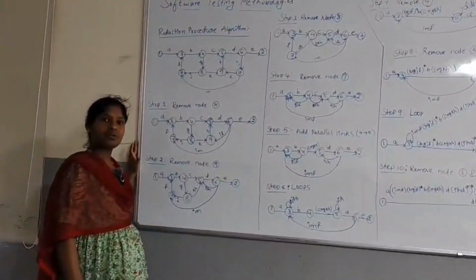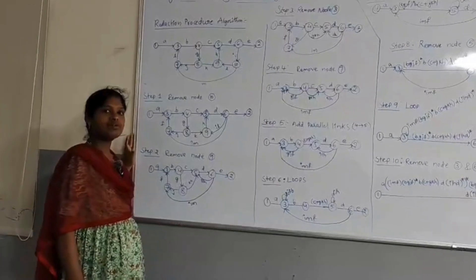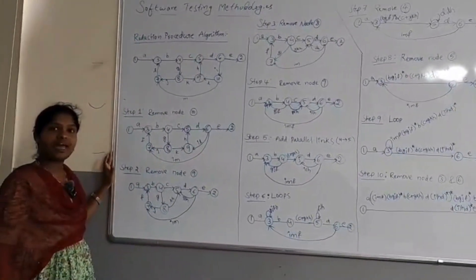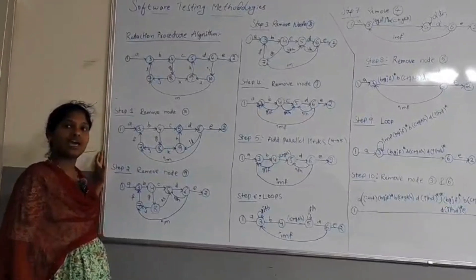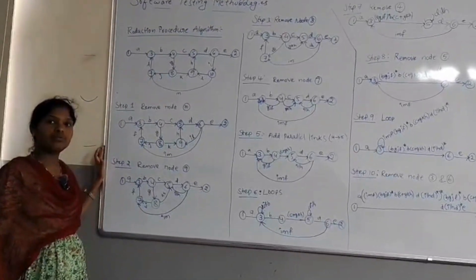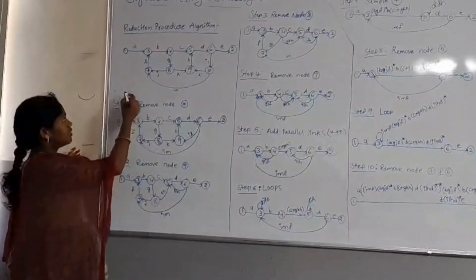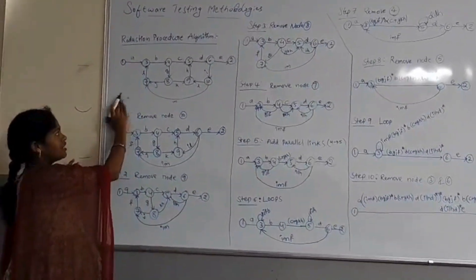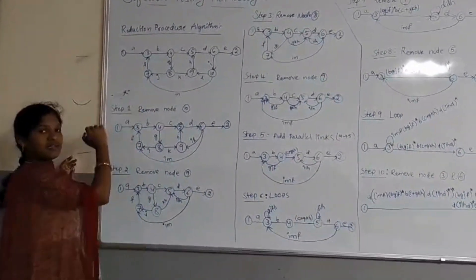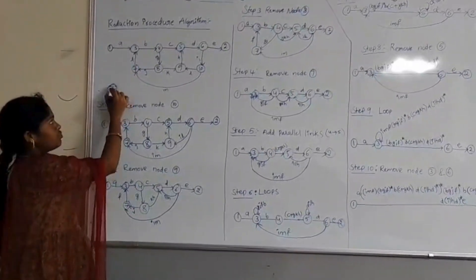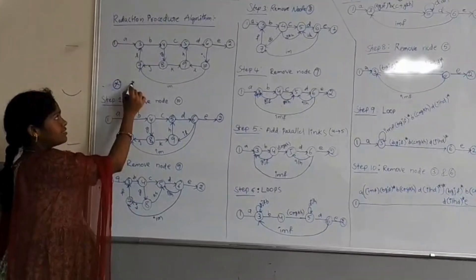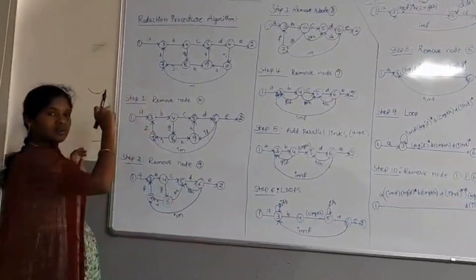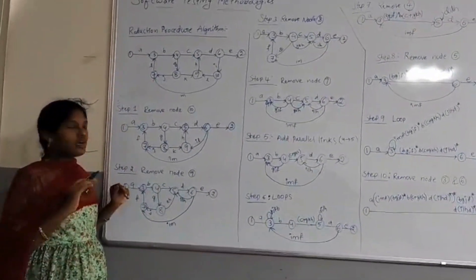The second step is parallel links — we have to add parallel links. The third step is wherever we have loops, we have to remove them by applying the star notation. For example, if there is an expression x, by removing the loop x, it will become x star. These are the steps we need to follow to remove the nodes.